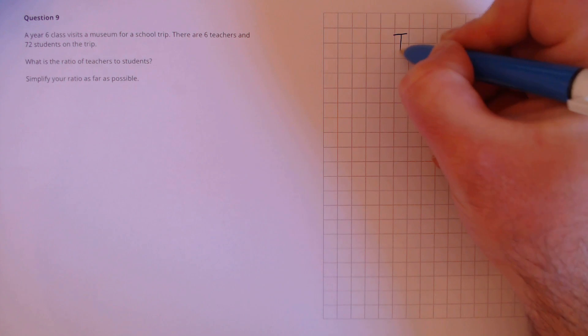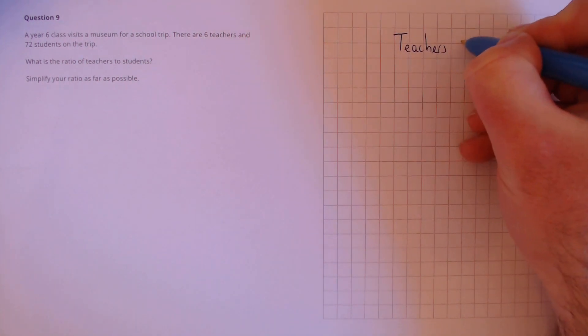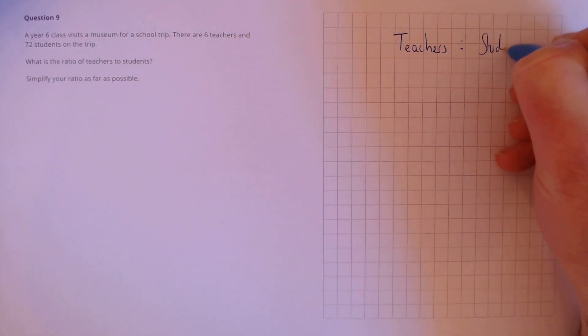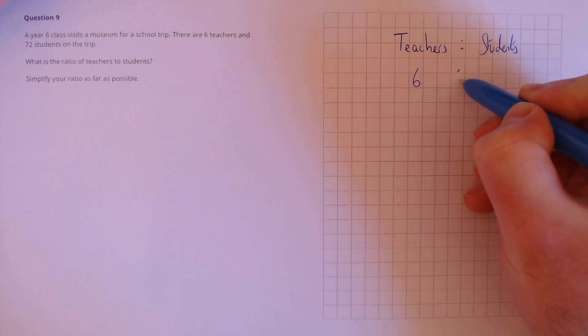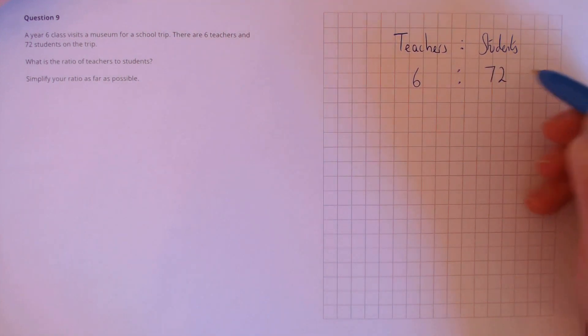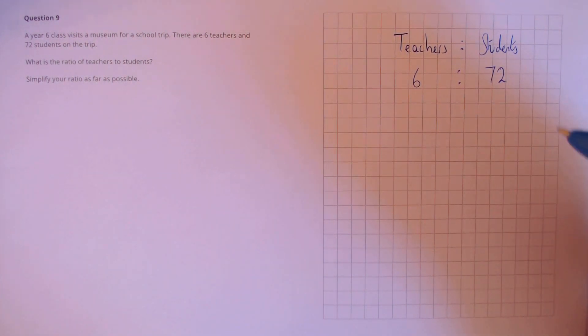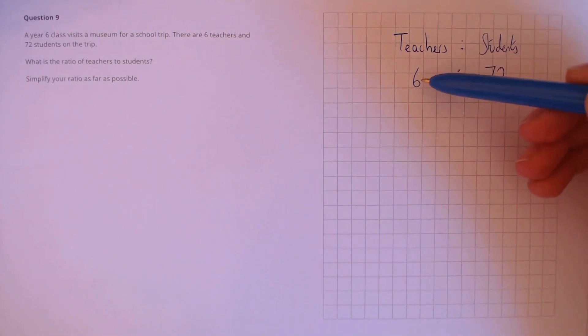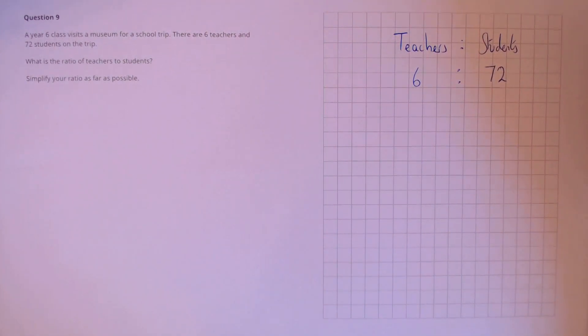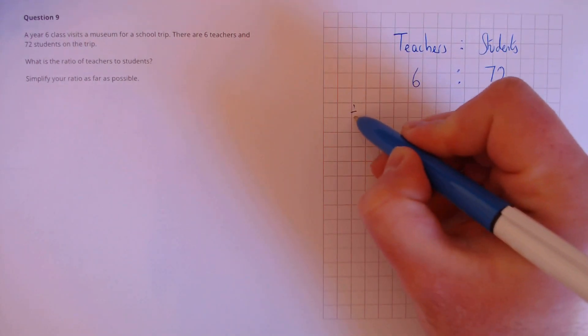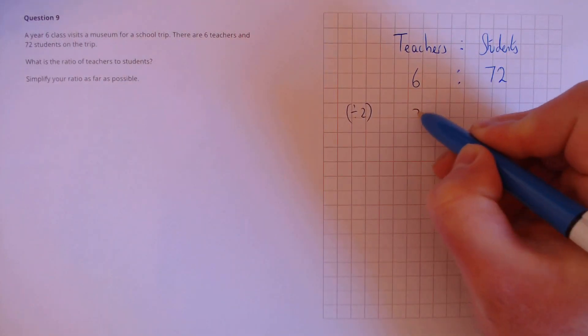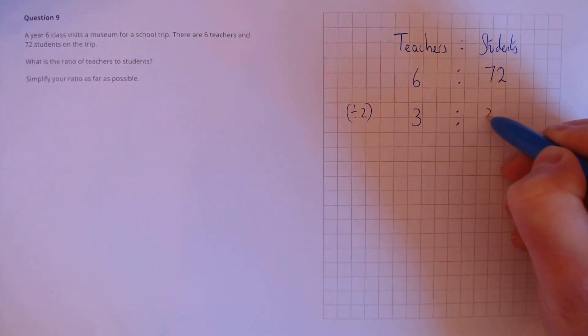So first, we need to form the ratio. Teachers to students. The question tells us that we have six teachers and 72 students on the trip. To simplify a ratio, we do it the same as a fraction. If we can divide both parts by the same number, then we can make that simplification. First, let's divide by 2. That's 3 to 36.